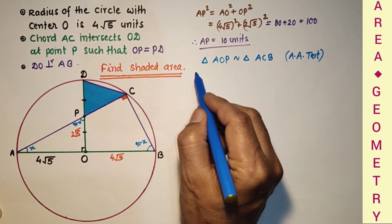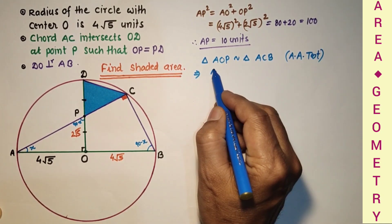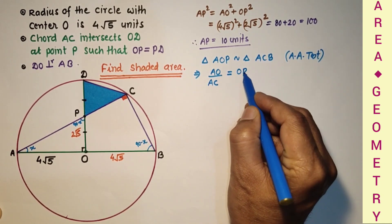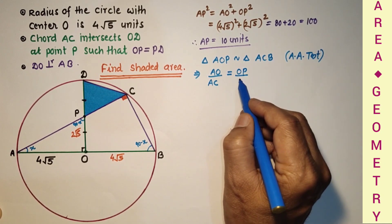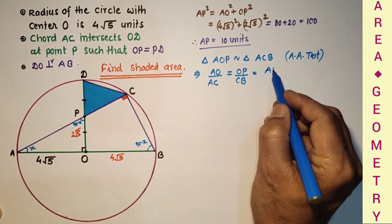And if the triangles are similar, then their corresponding sides will be proportional. So AO upon AC is equal to OP upon CB, that is equal to AP upon AB.